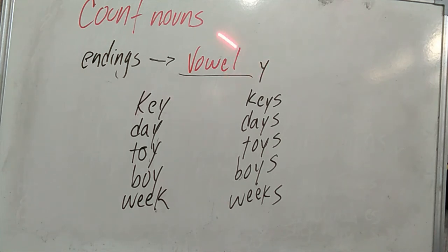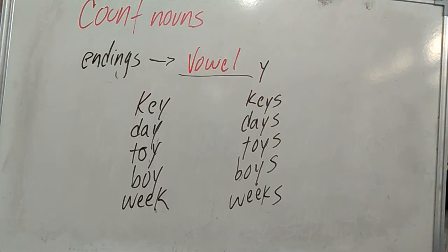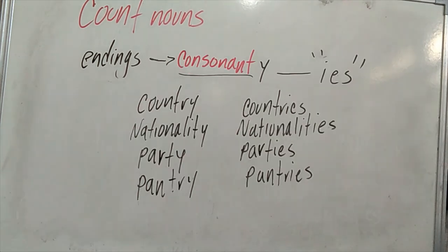Now we want to analyze the ending -Y but with a consonant before it. In this case, for example, the word 'country' has R before Y — that's a consonant. So: country → countries. We eliminate the -Y and write -IES to pluralize it.